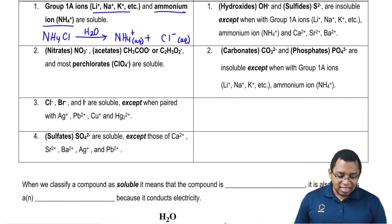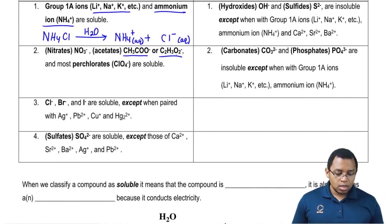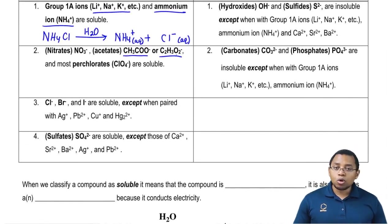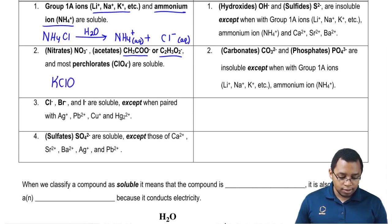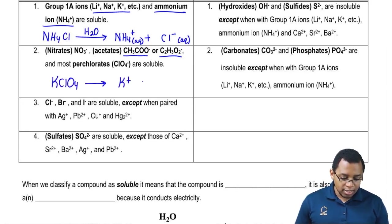Nitrates, acetates — and remember acetate can be written in two forms — and most perchlorates are soluble. When these are connected to a compound, they're going to be soluble. So if we have KClO4, this breaks up into K⁺ plus ClO4⁻.